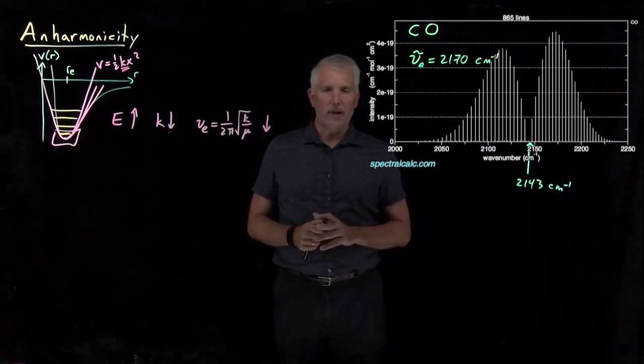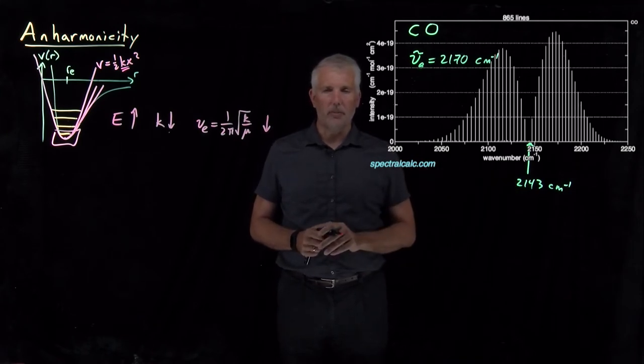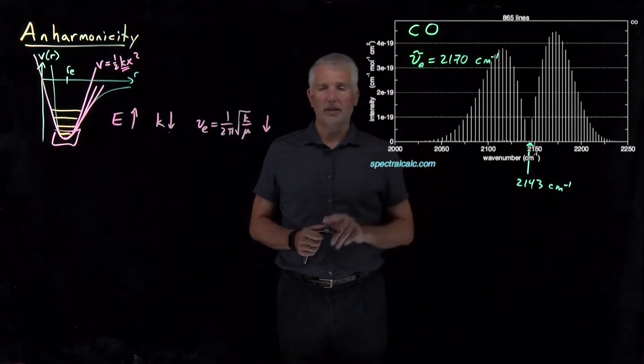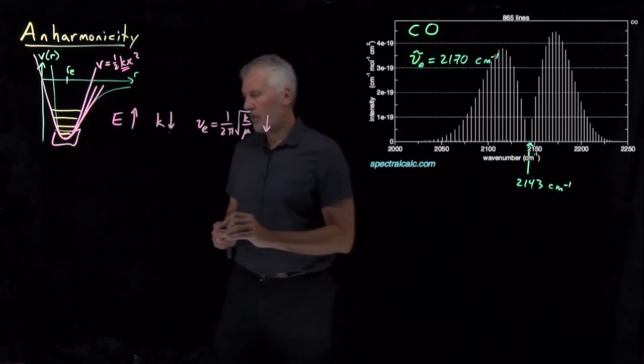So the next question is how do we go about coming up with a better approximation than the harmonic oscillator approximation to make better predictions of the experimental properties of carbon monoxide and other diatomic molecules? We can consider several approaches.